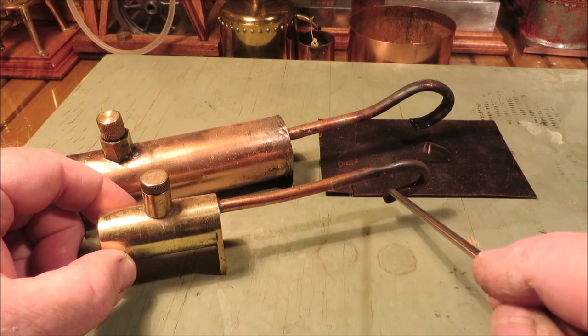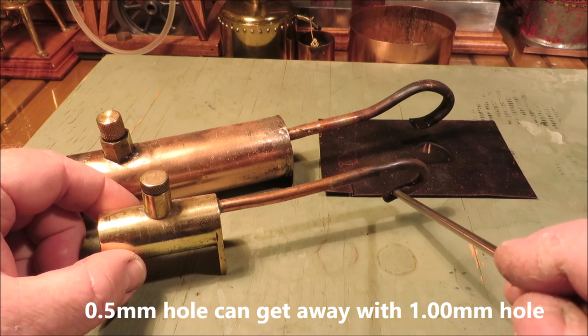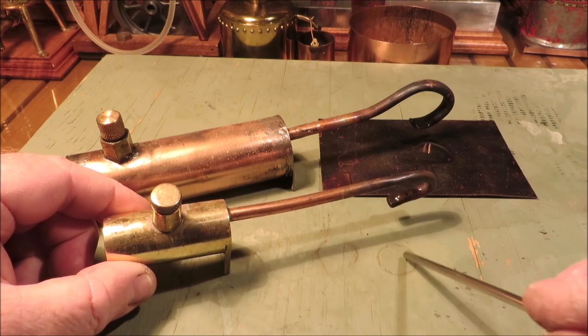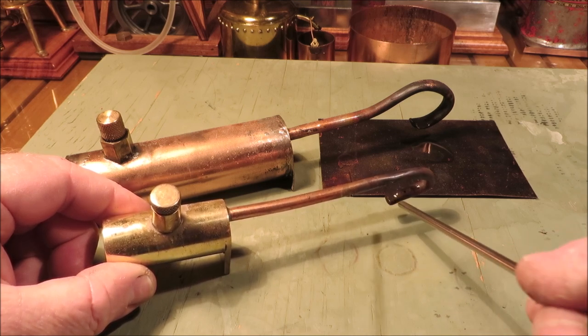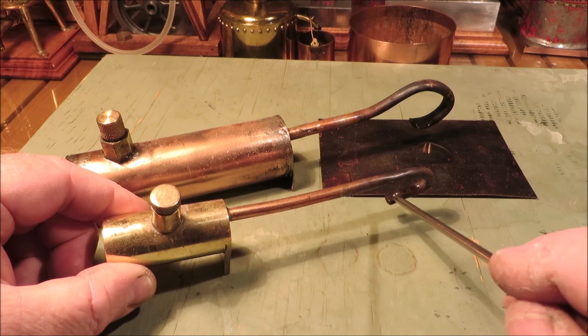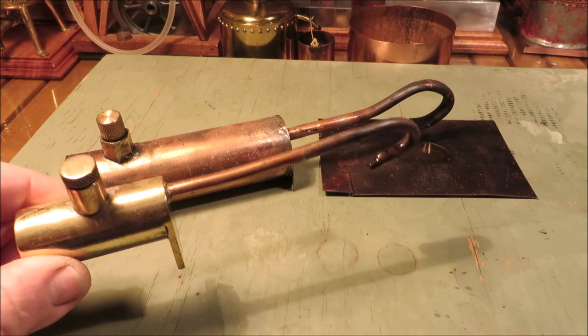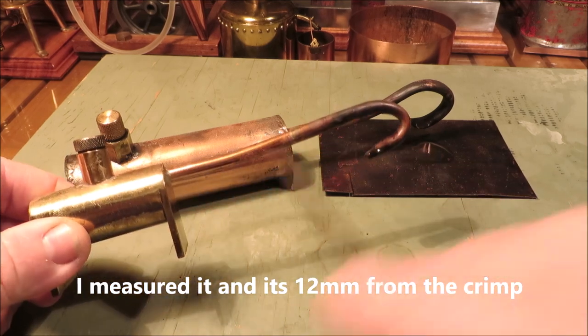Then you drill a half a millimeter hole. Don't whatever you do drill a half inch hole, which is pretty obvious. It's got to be a very fine hole, just about five mils back. Then you bend that curve in there.